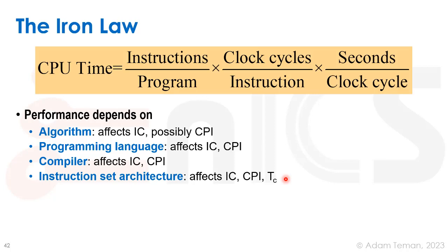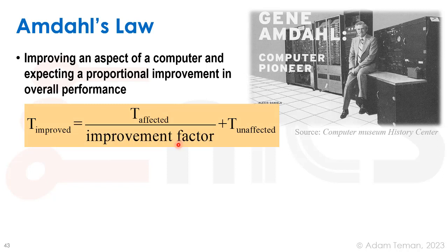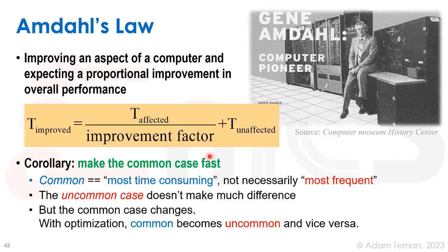Intel has been working hard for decades to narrow that gap. This brings us to Amdahl's Law. Gene Amdahl was a true pioneer of computing and one of the best known computer architects. His law states that you can only improve a system by the portion you actually work on. The execution time equals the unaffected part plus the affected part divided by the improvement factor. A corollary is to make the common case fast — where 'common' means the most time-consuming, not necessarily the most frequent.